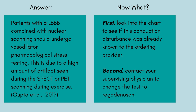First, look into the chart to see if this conduction disturbance was already known to the ordering provider. Second, contact your supervising physician to change the test to regadenosin. With our patient, the provider who ordered the stress test documented a history of left bundle branch block, so I contacted my supervising physician who agreed that a chemical stress test was the best choice.